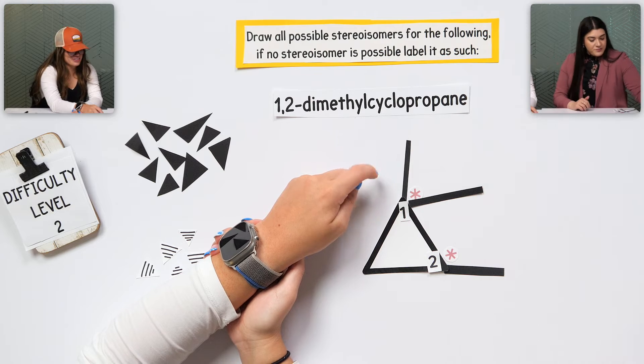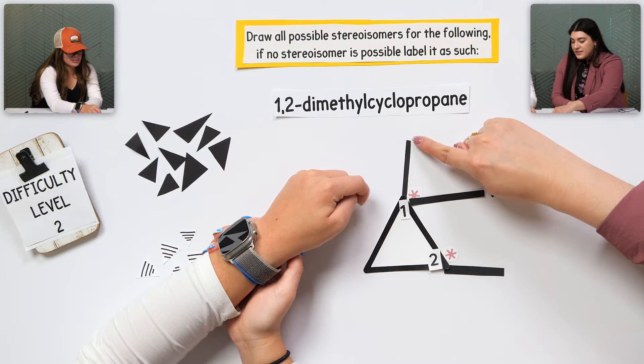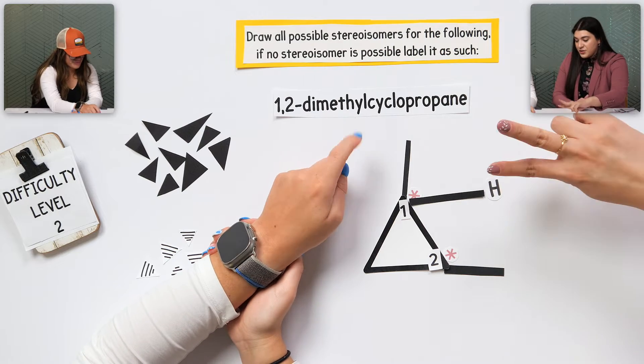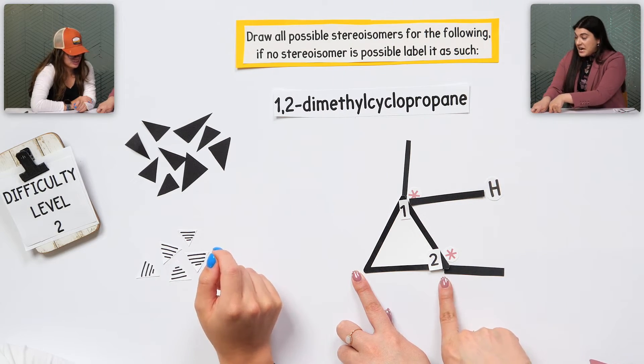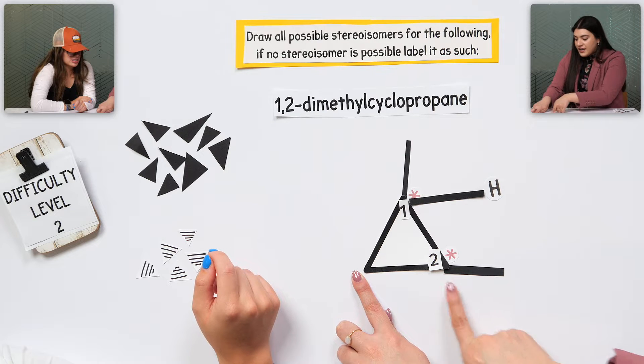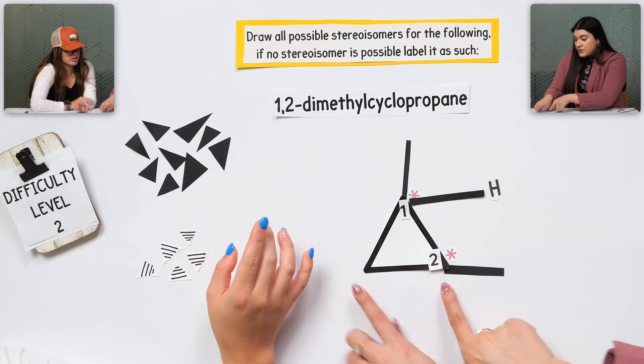Because there's three different... This is a hydrogen, right? I was getting confused. I was like, where did I get the four? Okay. If we just looked at this one, right? I know, this is a methyl. This is a hydrogen. Two different groups.